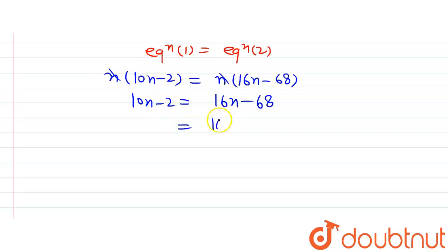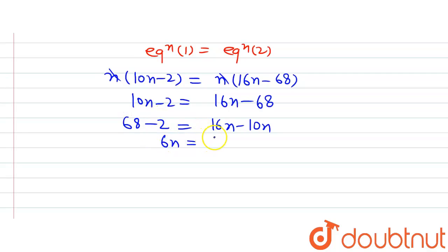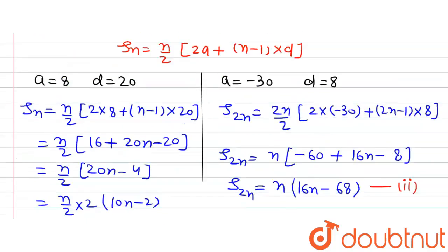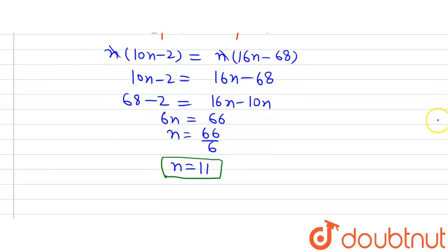Rearranging, 10n moves to the right and minus 68 moves to the left, giving us 68 minus 2 equals 16n minus 10n. So 6n equals 66, which gives us n equals 66 divided by 6, which equals 11. So the value of n is 11.